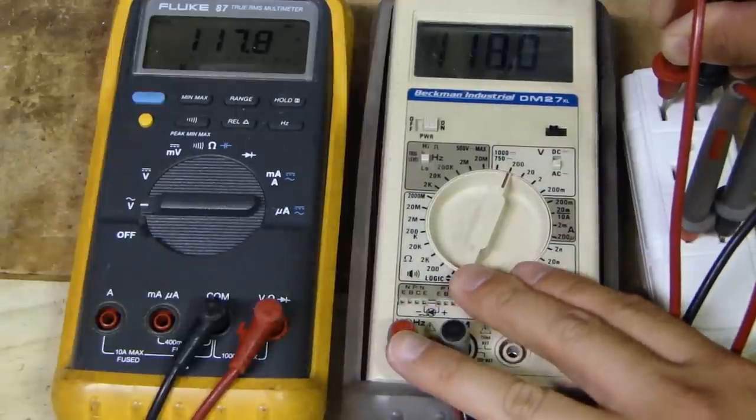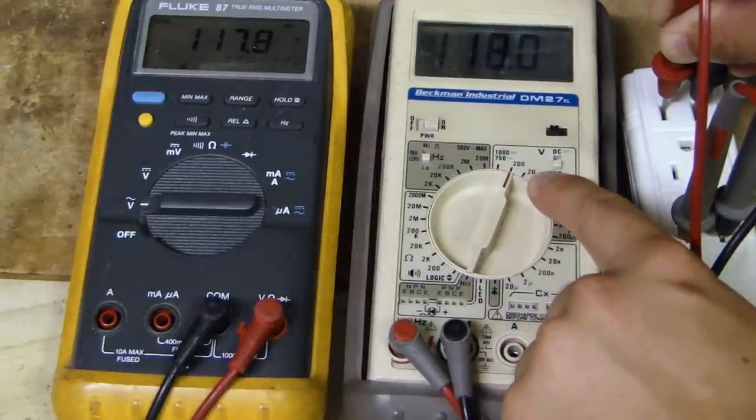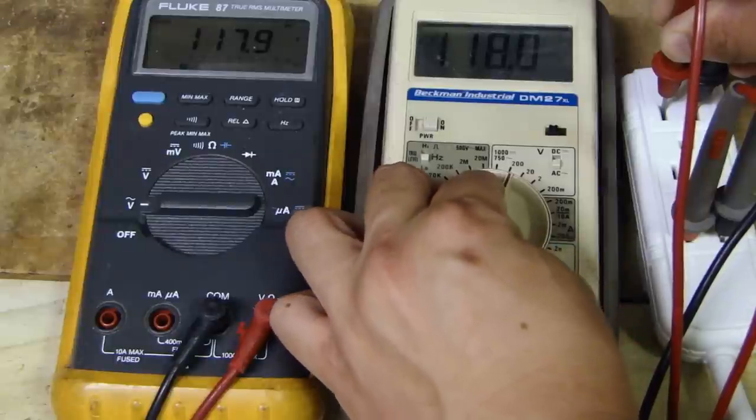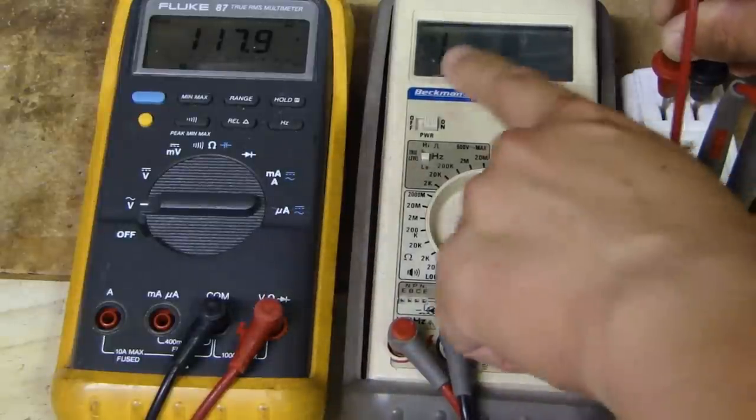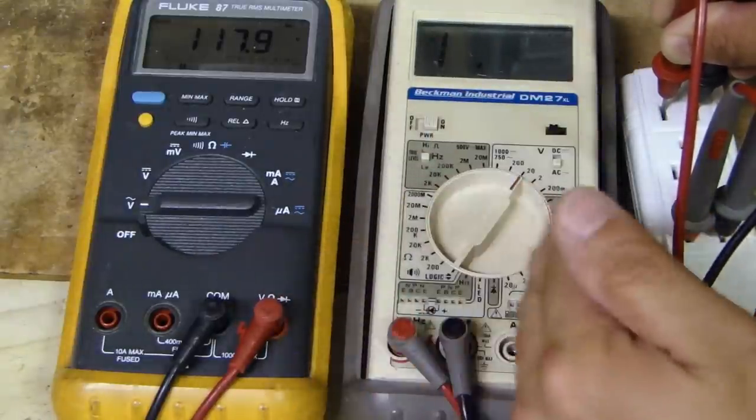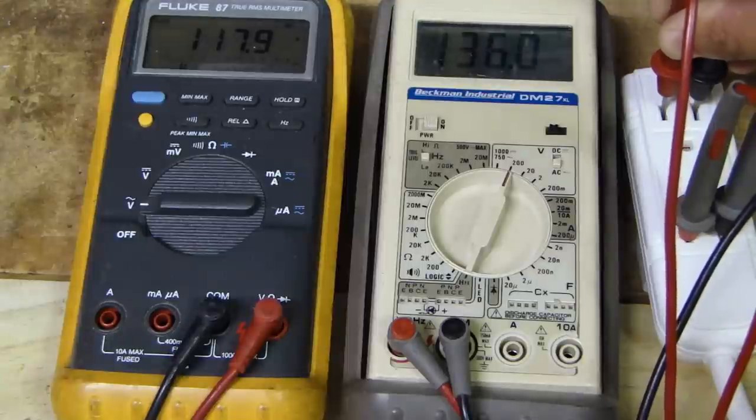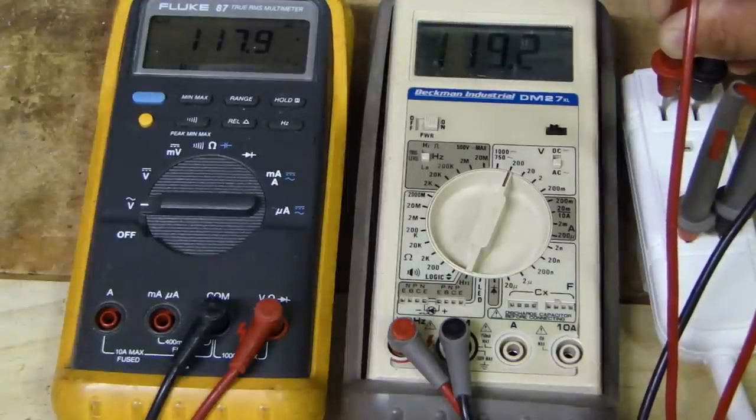This multimeter is not auto-ranging, so what would happen if I accidentally set it to the wrong setting, say to the 20 volt AC measurement? It'll give me a 1. Whenever you see that, it means that you've reached the maximum reading. You need to switch this over to the next higher scale, and then it'll read the voltage.